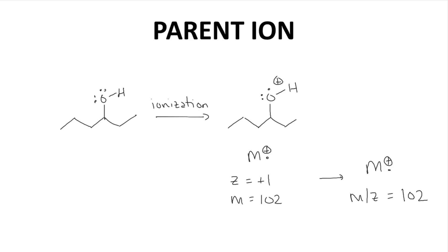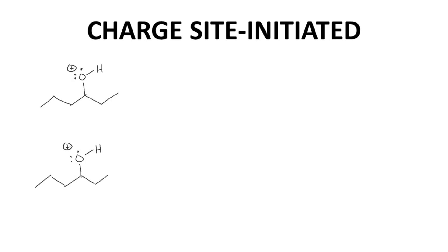Let's now talk about fragmentation. Here we have two of the same parent ion from the previous slide. The first type of fragmentation is charge site initiated, and we're going to break the CO bond. This can happen in two ways. One way is the bond can break heterolytically.